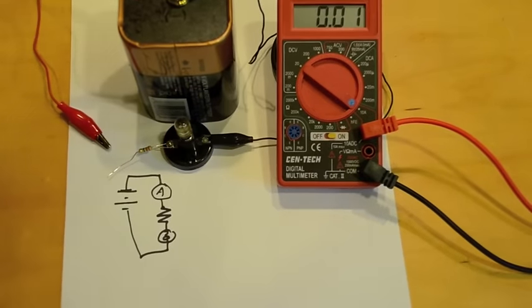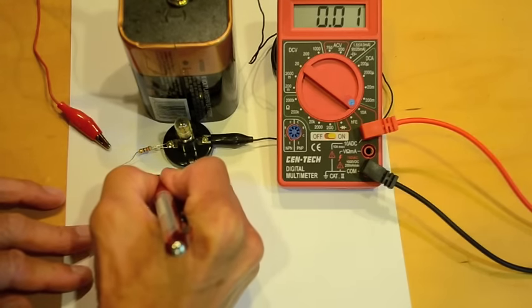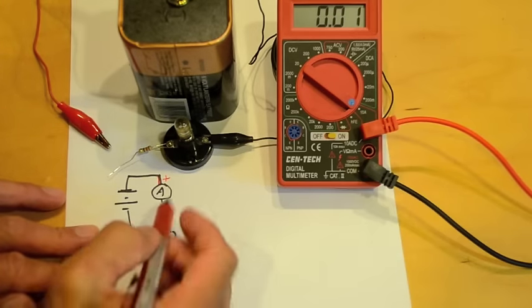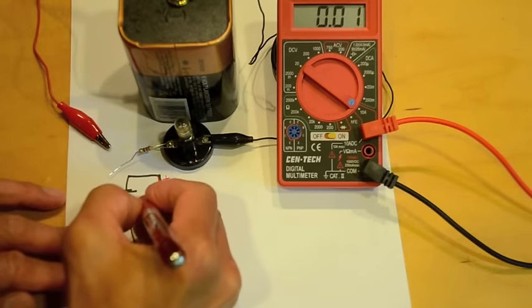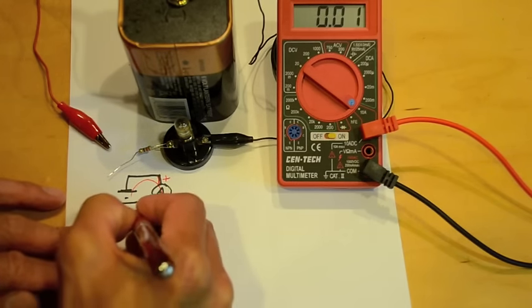So the ammeter, which is the digital multimeter set to amps, becomes part of the circuit. So this is the red wire on the meter here. And this is the black wire. And current is going to flow through the ammeter, through the resistor, light up the bulb, and come back.